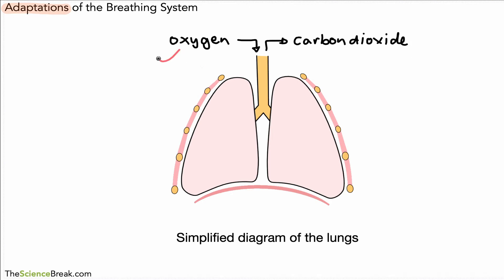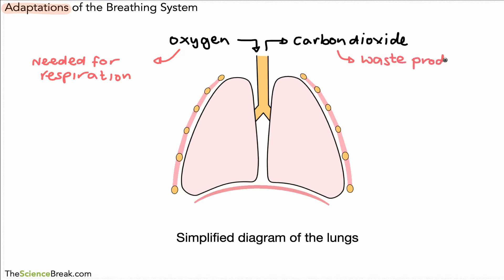Remember, oxygen is really important in the body because it's needed for a process called respiration. Oxygen is needed for respiration, so we must have that brought into the body. Carbon dioxide is a waste product from respiration, so it needs to be removed from the body. It's very important that we are constantly bringing in fresh oxygen and constantly removing carbon dioxide.